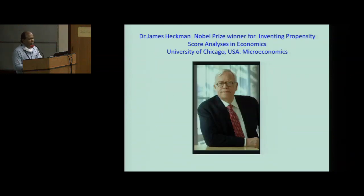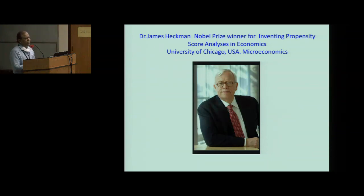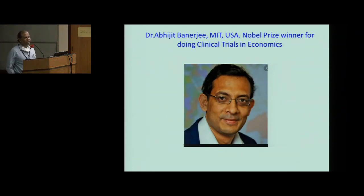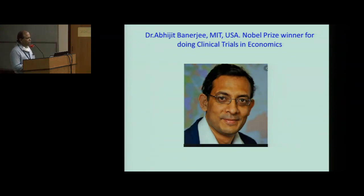James Heckman from the University of Chicago was the one who put this process together. He brought all the mathematics behind propensity score analysis and came out with the method of propensity score analysis in economics, for which he was awarded the Nobel Prize. Dr. Abhijit Banerjee did not like that kind of adjustment — he went directly into RCTs with many centers and was awarded the Nobel Prize for having done RCTs in economics. We do RCTs every day in medicine and still find it difficult to get them published.